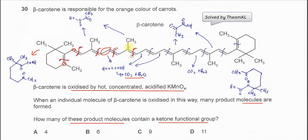Let's say this bond breaks — it will form this fragment. This section will form this molecule. This part will again form CO2 and H2O. So it will form the same molecule, and it has a ketone.